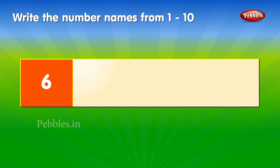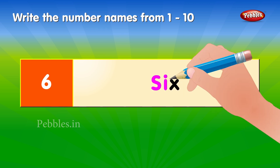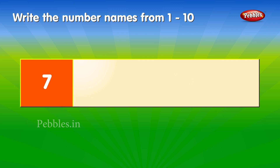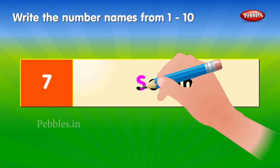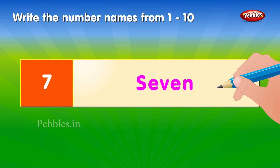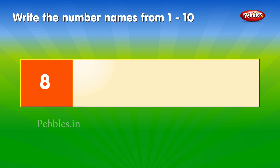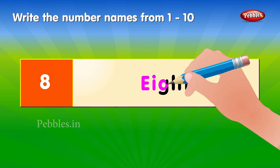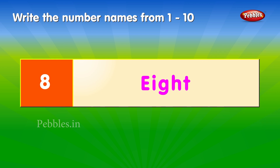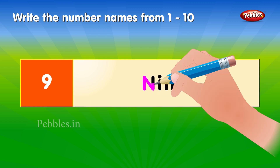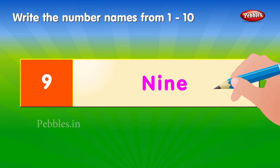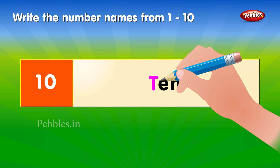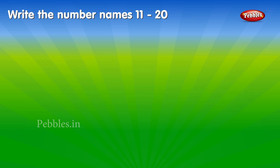6: S-I-X. 7: S-E-V-E-N. 8: E-I-G-H-T. 9: N-I-N-E. 10: T-E-N. Write the number names 11 to 20.